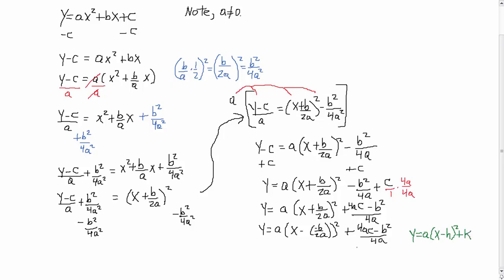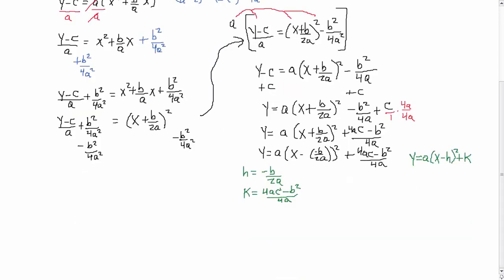So, here, if we compare term to term, right, two polynomials would be identical if they match term by term. So, here, we would note that H corresponds to negative B over 2A. And K corresponds to 4AC minus B squared all over 4A. So, these are the two formulas. And that would be the end result.